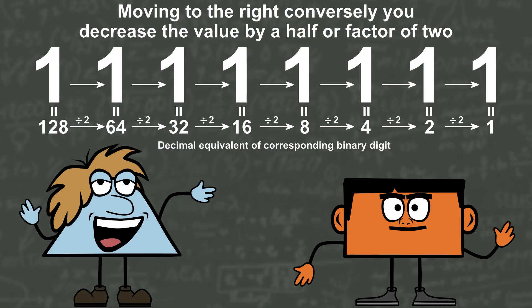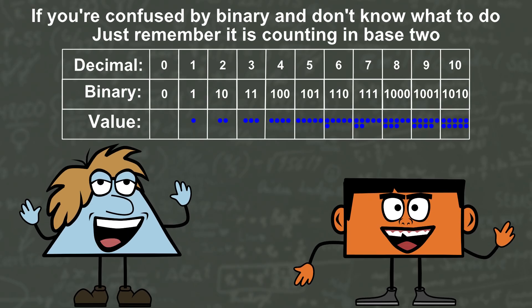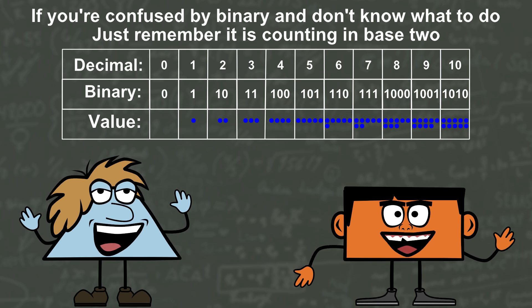Moving to the right, conversely you decrease the value by a half or factor of 2. If you're confused by binary and don't know what to do, just remember it is counting in base 2.